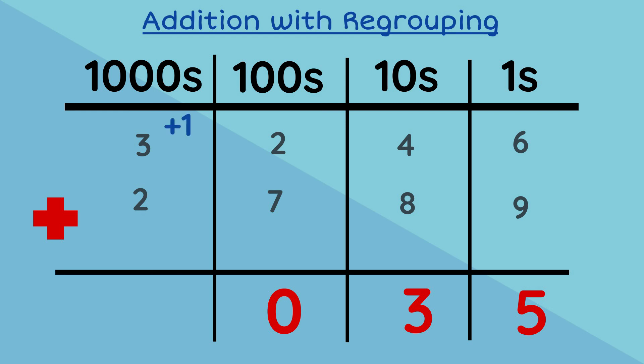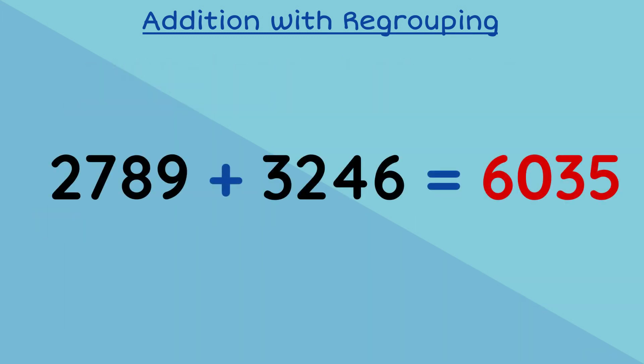And now we add our thousands. Two plus three plus one, which gives us six. We have our answer! Two thousand seven hundred and eighty nine plus three thousand two hundred and forty six equals six thousand and thirty five.